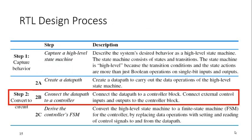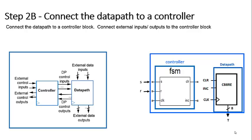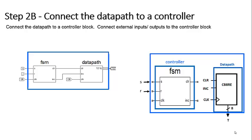The next step in our RTL design process is 2B, which is to connect the datapath to a controller. We have our model and definition on the right-hand side. Our controller is going to consist of a finite state machine. Our outputs are going to be clear and increment. Our inputs are going to be S and R. Given to us in the manual, we see that we can connect our finite state machine to our datapath. We can also define our inputs going into our system by S, R, clock, and our outputs being T.